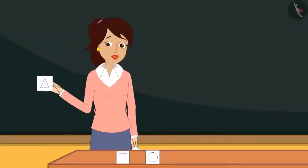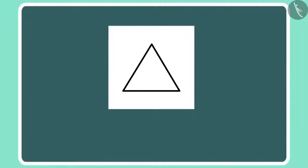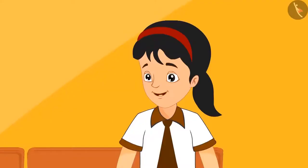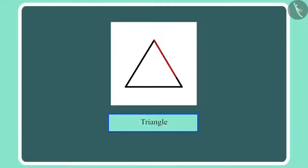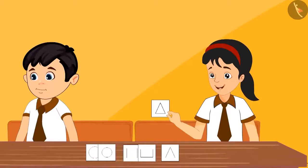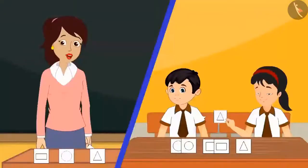And now let's see this shape — we call it a triangle. Ma'am, why do we call this a triangle? Pinky, because this shape is made of three lines, that's why we call it a triangle. Then that means this is also a triangle, right? Yes Pinky, you are right — this is also a triangle.